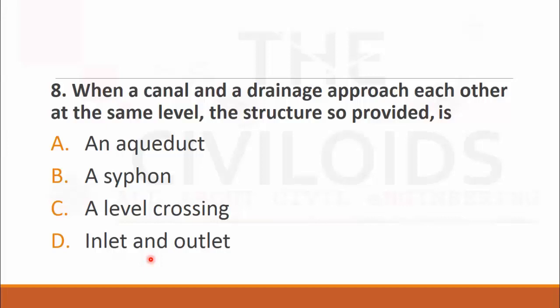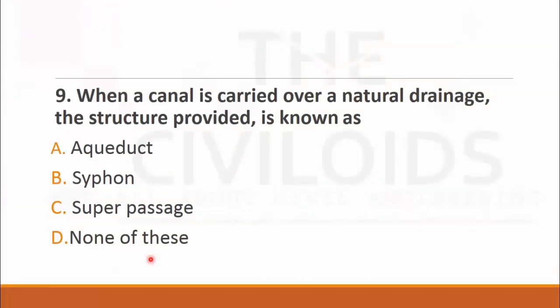MCQ number nine: When a canal is carried over a natural drainage, the structure provided is known as. The choices are: A. aqueduct, B. siphon, C. super passage, and D. none of these. According to the definition of aqueduct, the right choice is A. aqueduct.